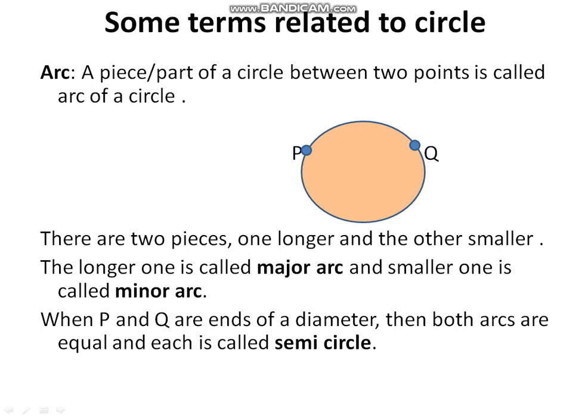Next, we will discuss some terms related to the circle. First term: arc. A part of a circle between two points is called the arc of a circle. In the given figure, consider two parts — one is the larger part and another is the smaller part. The longer one is called the major arc and the smaller one is called the minor arc. When P and Q are the ends of the diameter, each part is called a semicircle.